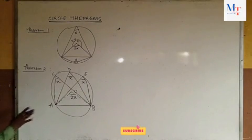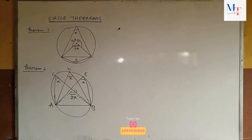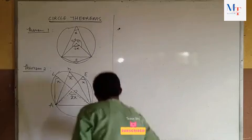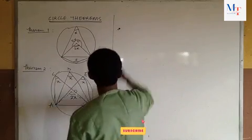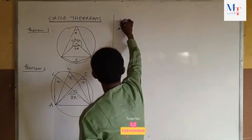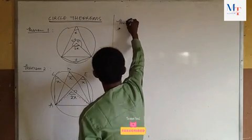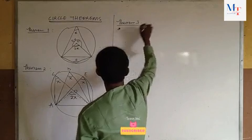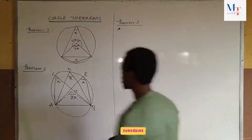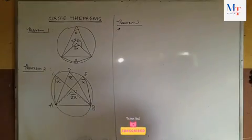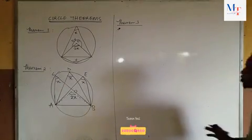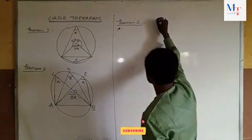You must be able to recognize when angles are in the same segment — that is theorem 2. Theorem 3 states that the angle in a semicircle is a right angle, that is 90 degrees.